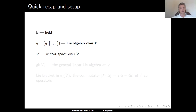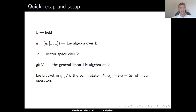We will study representations of g on vector spaces over k. We fix a vector space v over k and consider the general linear Lie algebra of v. This is a Lie algebra of all linear endomorphisms of v, where the operation is the commutator of linear maps. The set of all linear endomorphisms of v is an associative algebra with respect to the composition of maps, and gl(v) is the Lie algebra associated to this associative algebra.